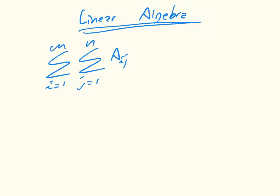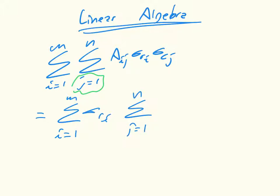Of aij times sigma ri times sigma cj, then we can rearrange that ever so slightly. So first of all, we can take the sum that's only bothered with the j inside, and so we get that that's equal to the sum from i equals 1 to m of sigma ri times the sum from j equals 1 to n of aij sigma cj.